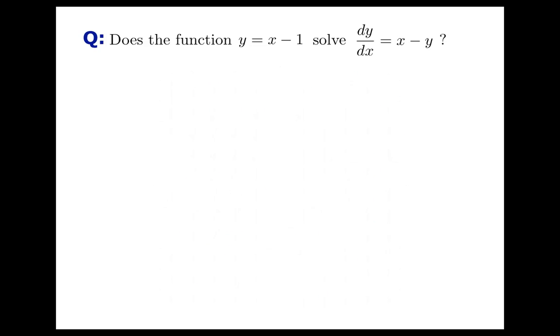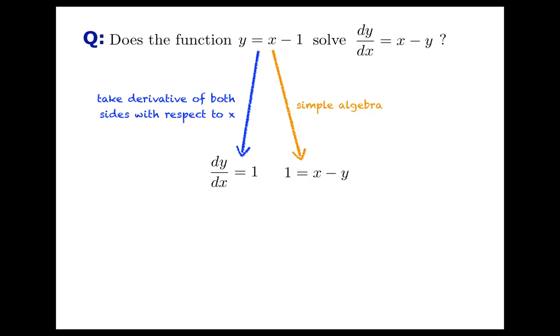And we can check that with not much trouble, because if we take y equals x minus 1 and take the derivative, you just get dy/dx equals 1. On the other hand, simple algebra tells you that 1 is equal to x minus y all along that line. These two expressions are the same. So yes, y equals x minus 1 is indeed a solution. We were inspired by the slope field to even guess what one of the solutions was, and we had no way of attacking the original problem using separation of variables or any other method.